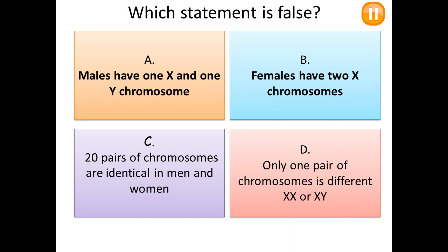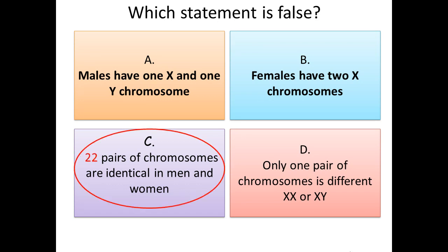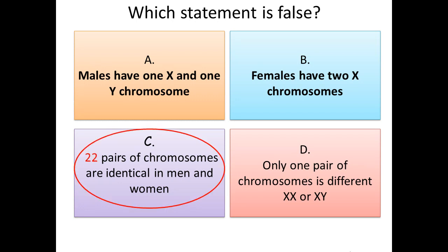Here is another task: which statement is false? Only one is false — pause the video to pick your answer. The correct answer is C, because the statement said 20 pairs of chromosomes are identical in men and women. The correct information is that 22 pairs of chromosomes are identical in men and women, and then pair 23 is the one that determines the biological gender of the human being.